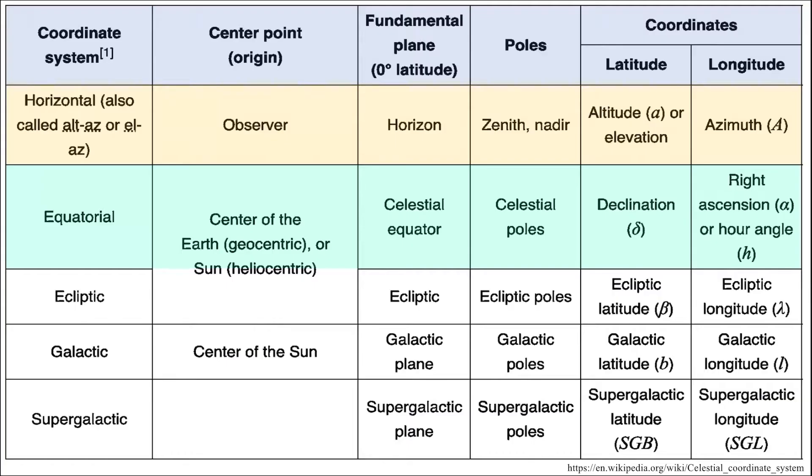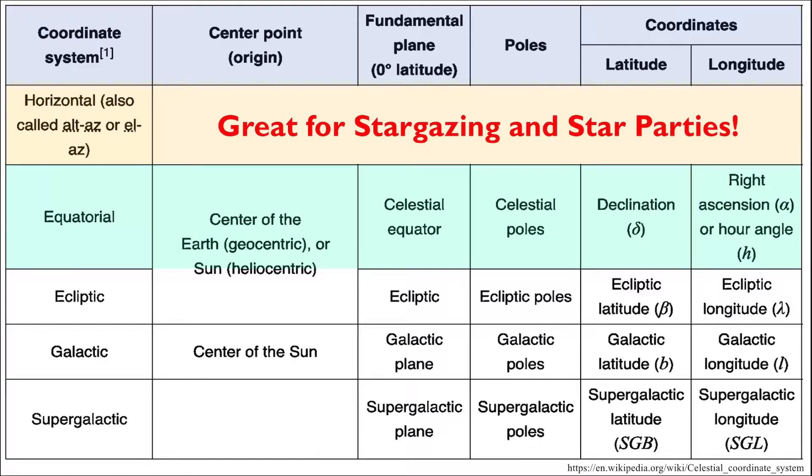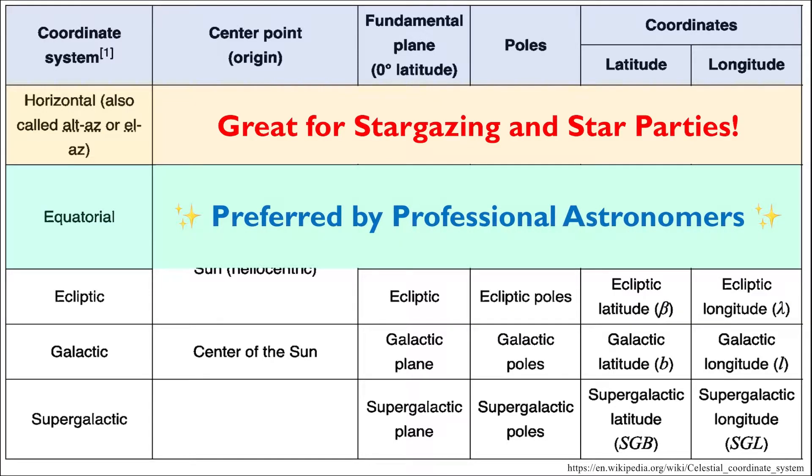While the horizontal coordinate system may be ideal for stargazing and observations of the night sky with small groups of family or friends, the equatorial coordinate system is preferred by professional astronomers because it does not depend on the observer's location and it can be used by teams of astronomers working together in various places simultaneously.